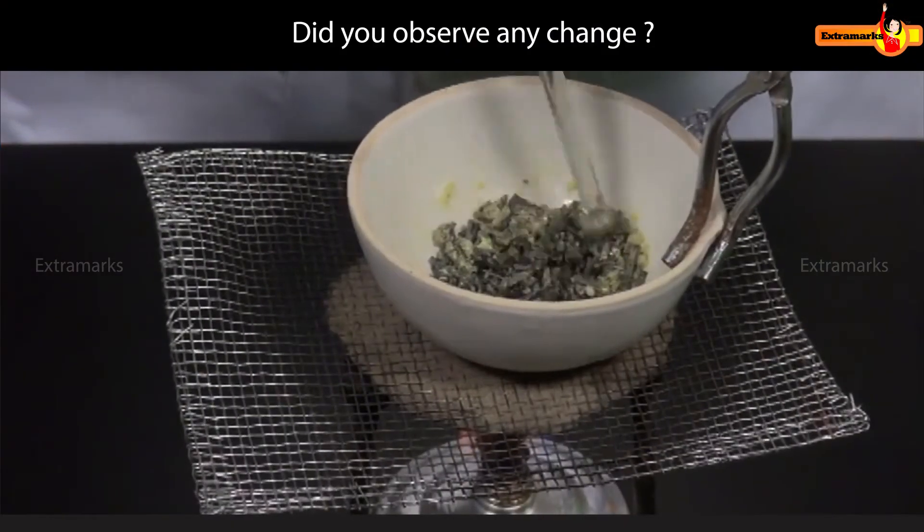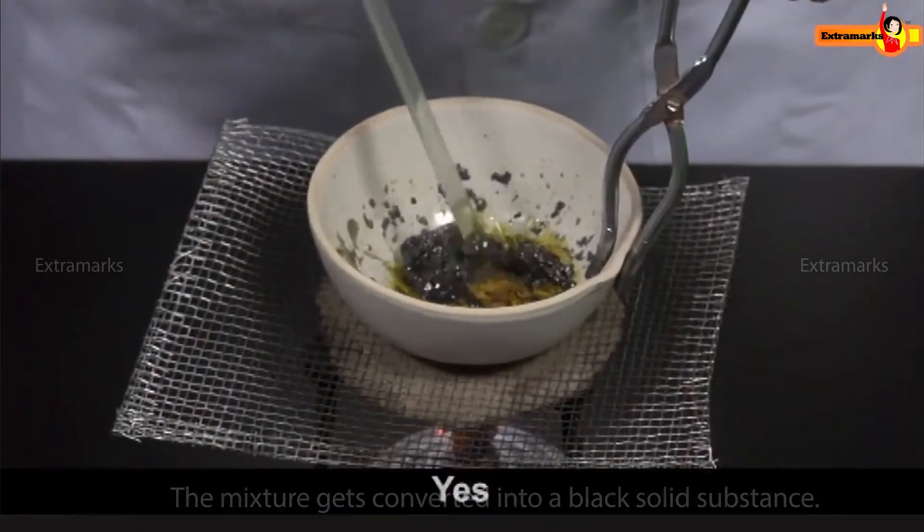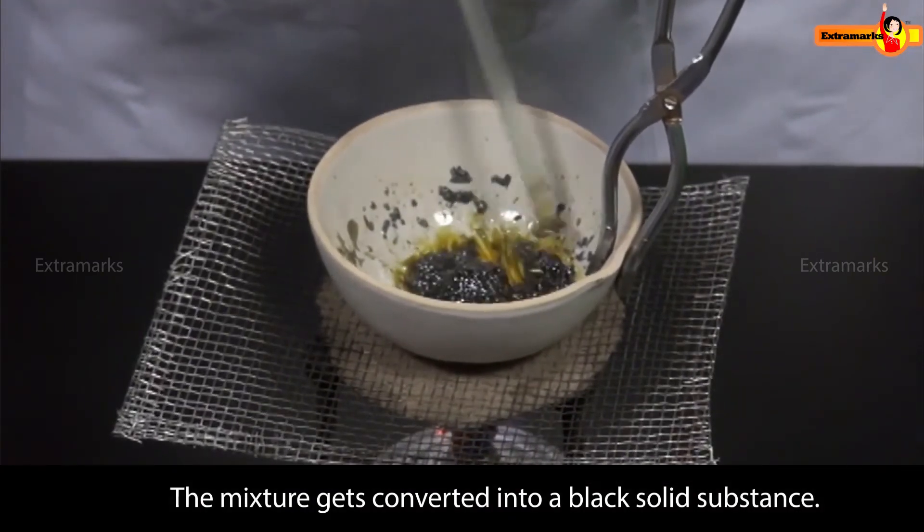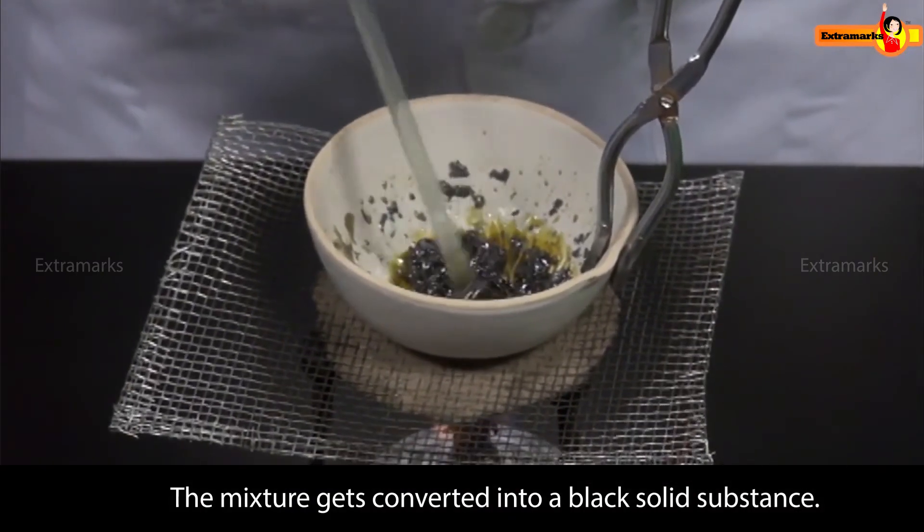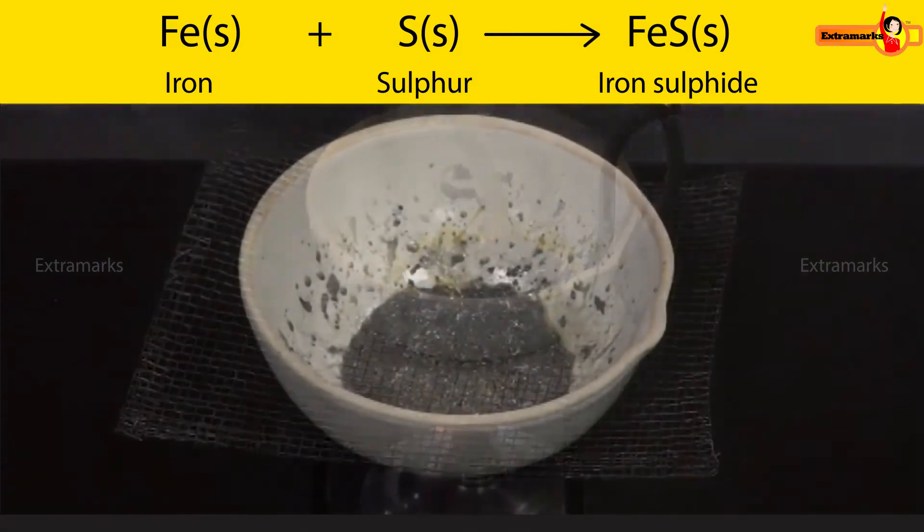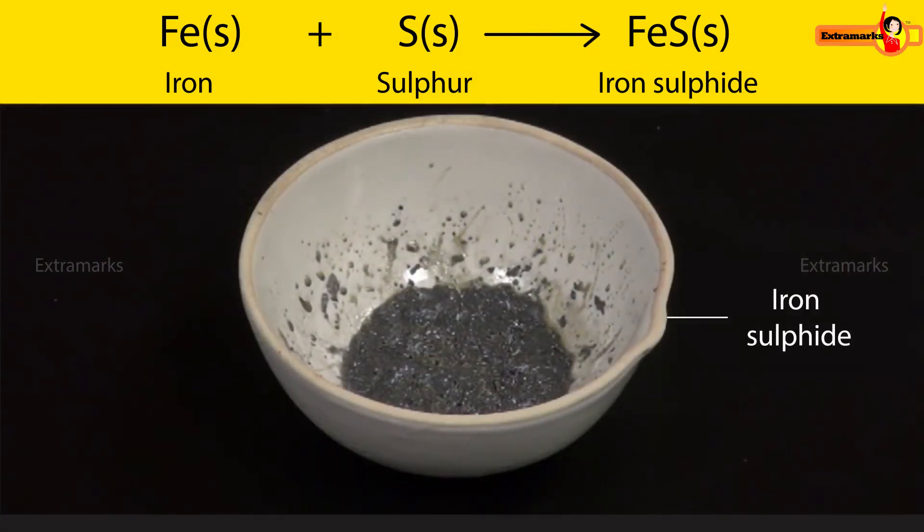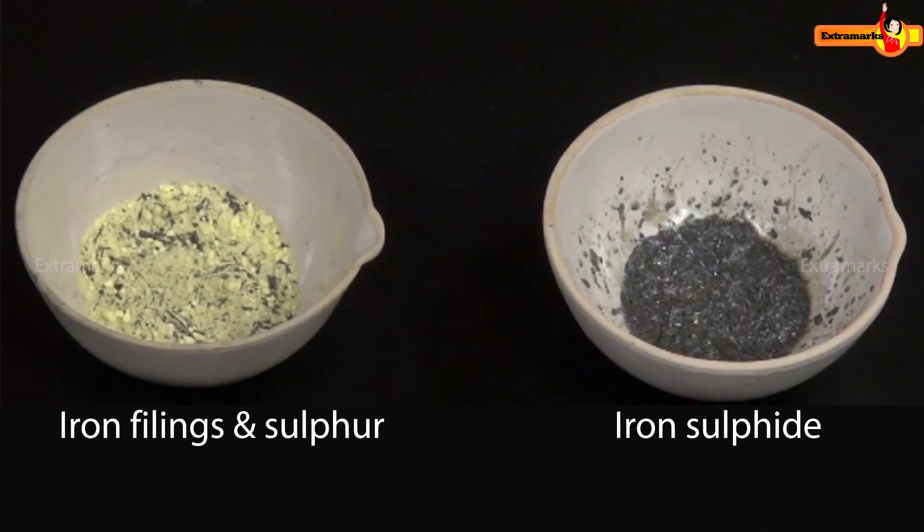Did you observe any change? Yes, on heating the mixture, it gets converted into a black solid substance. This black solid substance is iron sulphide. Thus, iron combines with sulphur to form iron sulphide.